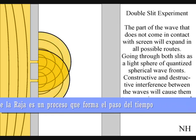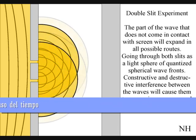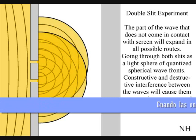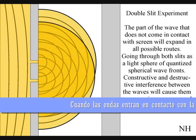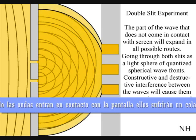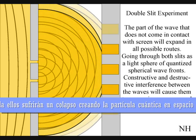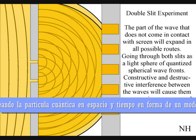Interference between the waves will cause them to superimpose or cancel each other out. When these waves come in contact with the screen, they will collapse, creating quantum particles in space and time in the shape of an interference pattern.